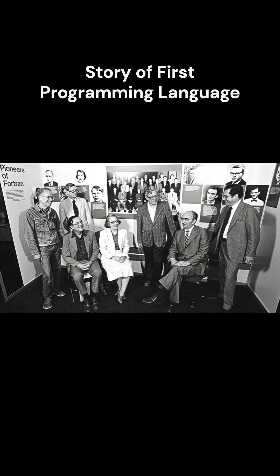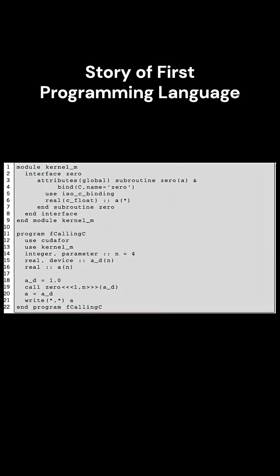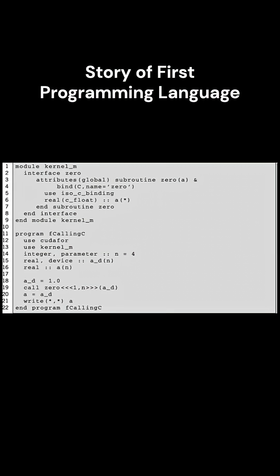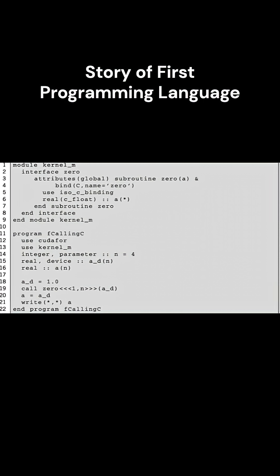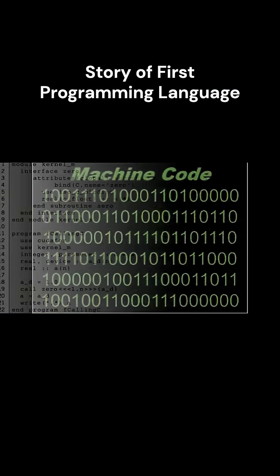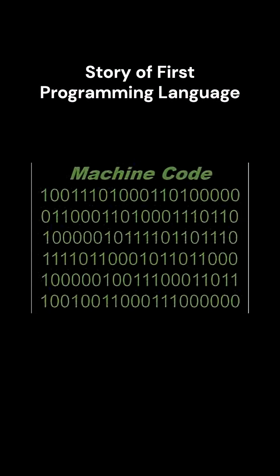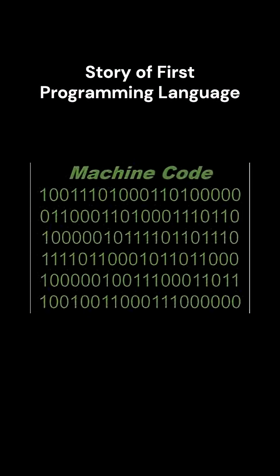Their bold idea was to create a new kind of language that would translate human-readable formulas into efficient machine code. Machine code means zeros and ones.